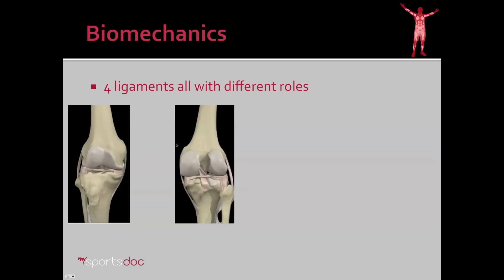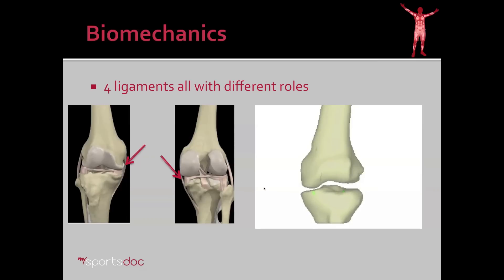Looking at the four ligaments of the knee, the medial collateral and lateral collateral prevent side-to-side motion of the knee. Here we have the MCL from the front, and looking from the back you can also see the ACL, PCL, meniscus on either side, and the LCL. Focusing on the MCL and LCL — what motion does that prevent? It's the side-to-side motion. The MCL prevents the knee from opening up on one side, as the MCL tightens up with that motion.